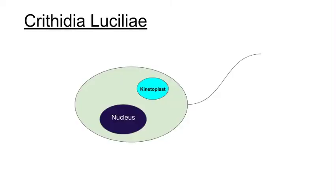First off, C. luciliae is a flagellate microorganism that's used for this assay due to a unique organelle called a kinetoplast. This kinetoplast essentially is a cluster of double-stranded DNA molecules.